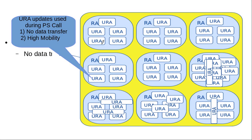URAs may overlap with one another. As far as specifications are concerned, there are no conditions on the relationship between LAs and URAs, or RAs and URAs — meaning URA planning can be independent of LAs and RAs. Normally, a location area is divided into multiple routing areas, and each routing area is then divided into multiple URAs. It is also possible that a location area is part of a bigger URA.